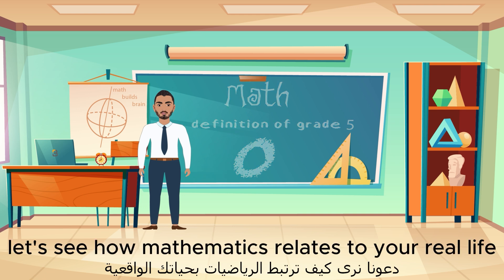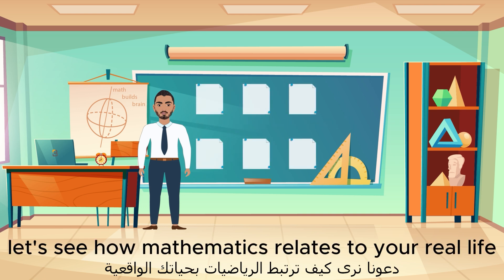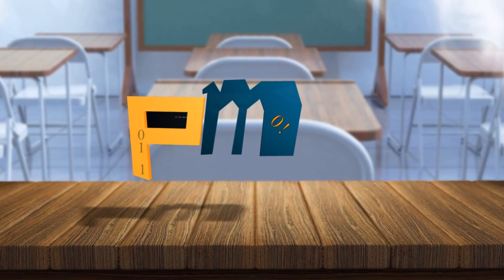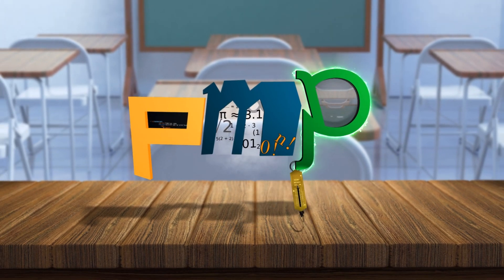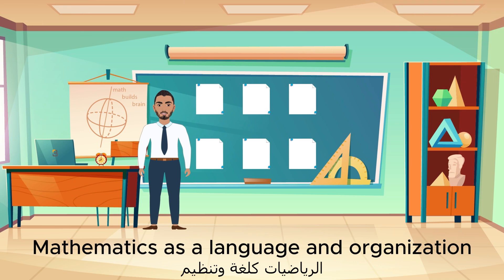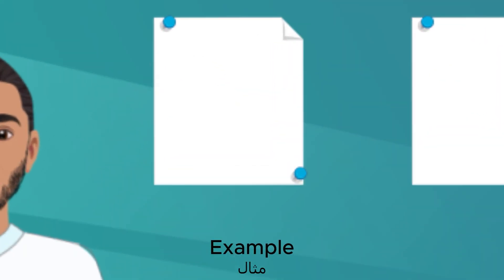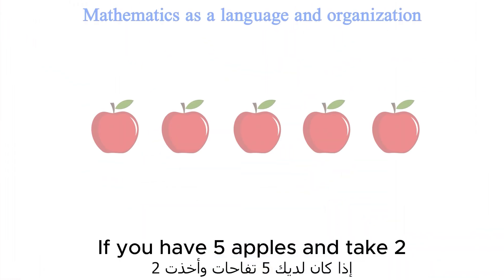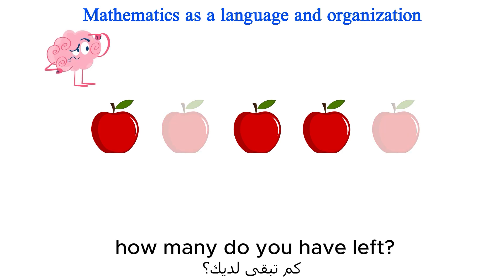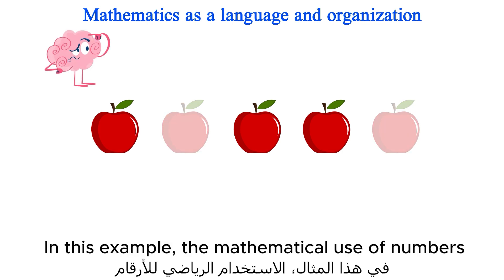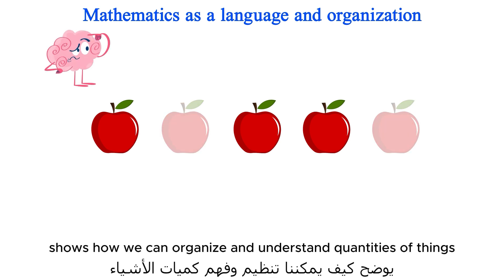Let's see how mathematics relates to your real life. Mathematics as a language and organization — Example: If you have five apples and take two, how many do you have left? In this example, the mathematical use of numbers shows how we can organize and understand quantities of things.